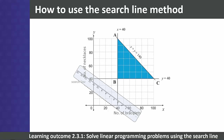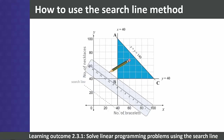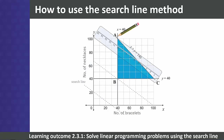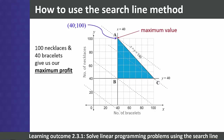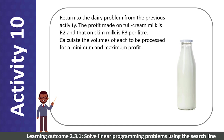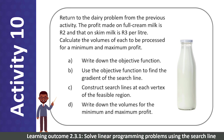We take our ruler and slide it upwards on the graph parallel to the original line. As we pass through each vertex, we draw a line through the vertex with a gradient of negative two-thirds. It is clear that vertex A gives the maximum using the search line. The coordinates of this point give the solution: 100 necklaces and 40 bracelets.